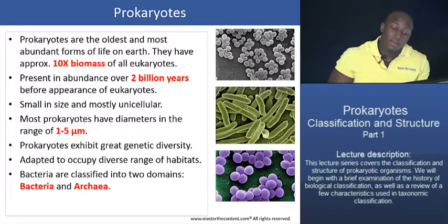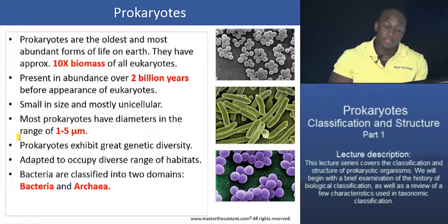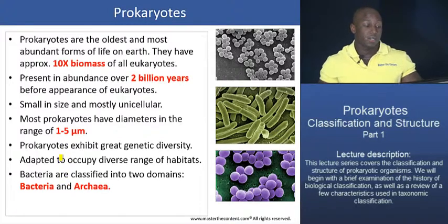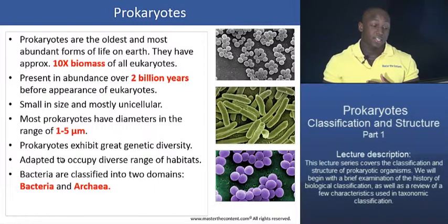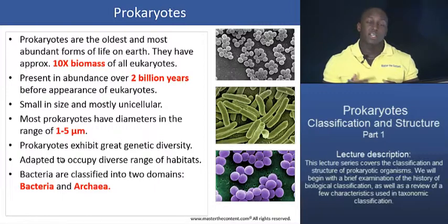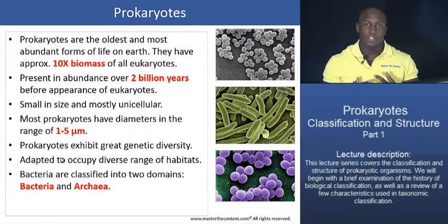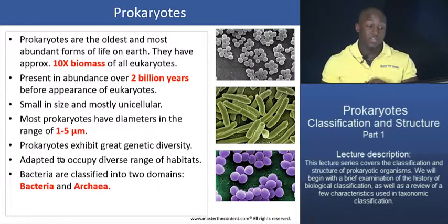Prokaryotes are also highly adapted organisms that can occupy a diverse range of habitats. You would typically find them thriving in extreme conditions — conditions that are either too cold or too hot, too salty or acidic for eukaryotic cells — because they develop specialized adaptations that allow them to occupy these habitats. They're an extremely resistant and adapted class of organisms found in very extreme conditions.